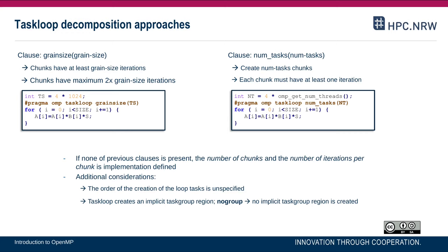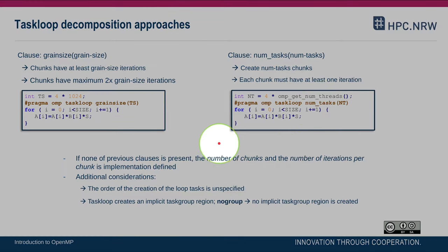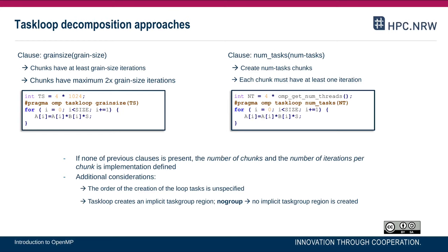Finally, the task loop creates an implicit task group region. That means at the end of the task loop there is a task barrier — a taskwait that waits not only for direct children but for all tasks generated within the extent of the task loop construct. Program execution will only continue after the task loop once all tasks have been completed. If you do not want that, you can add the nogroup clause, which eliminates the implicit task group and the waiting functionality at the end of the task loop. You as a programmer are then required to guarantee that eliminating this waiting functionality still results in correct code.